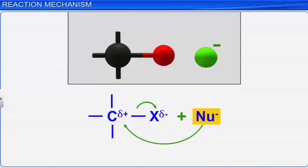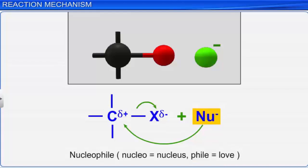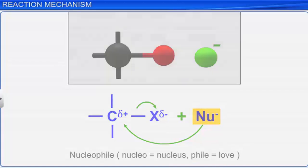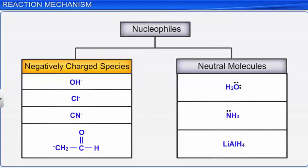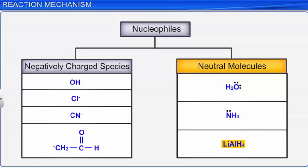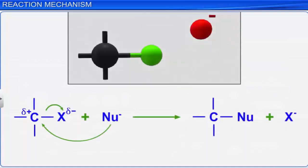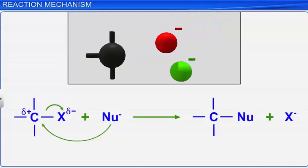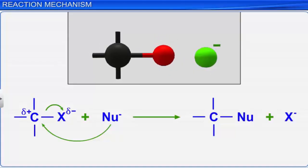An electron-rich reagent that donates electrons to the positive or electron-deficient site in a compound is called a nucleophile. A nucleophile is a nucleus-loving species as it is electron-rich. Negatively charged species with lone pairs of electrons such as hydroxide, chloride, cyanide ions, and carbanions, and neutral molecules such as water, ammonia, and lithium aluminum hydride are some examples. A reaction initiated by a nucleophile is called a nucleophilic reaction. Nucleophiles always attack the substrate molecule at the site of minimum electron density.